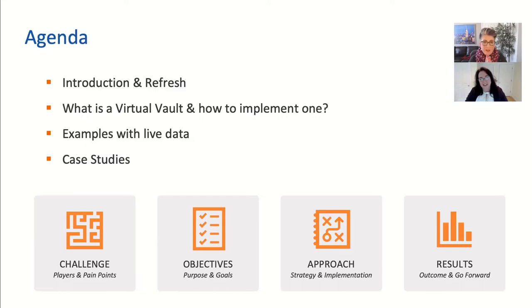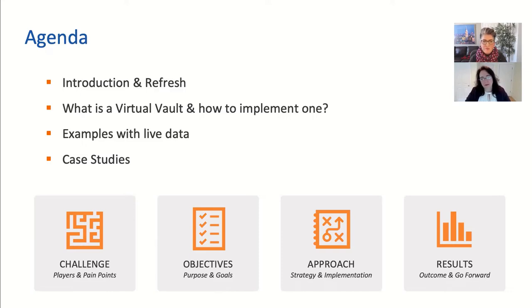First, we're going to do a bit of an introduction and refresh on auto classification in general. Then we're going to dive into: what is a Virtual Vault, how is it going to help companies, how do I implement one, and how does it work? We've also got some live data set up in our environment, so we're going to look at what that live data looks like in a virtual vault environment. Then we'll go through case studies — two major clients — covering the four phases: their challenge, objectives, strategy and implementation, and results.